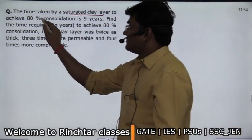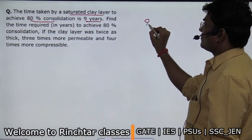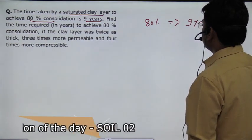For 80% consolidation, it takes 9 years. This has been explained. Here you have the first data for 80% consolidation. This is the first data.